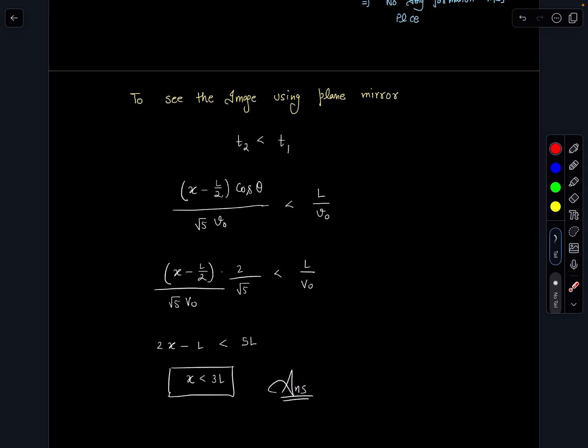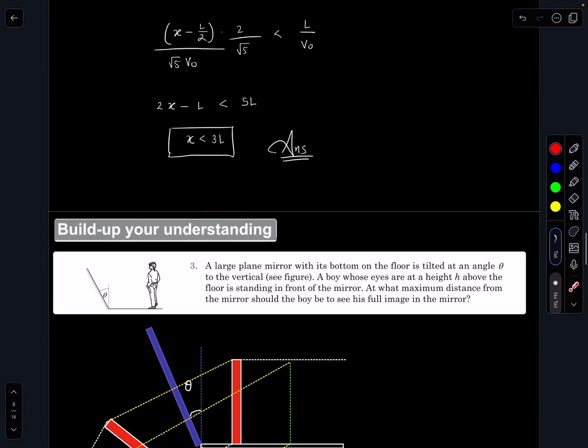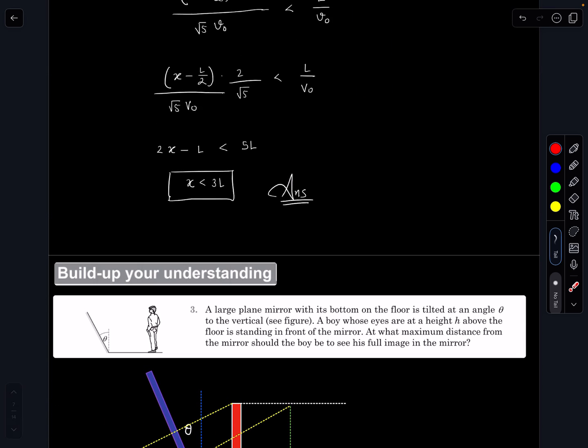There is one more problem on a similar concept from Pathfinder, under the section Build Up Your Understanding, or BYU. It is given: a large plane mirror with its bottom on the floor is tilted at an angle theta to the vertical. A boy whose eyes are at a height H above the floor, so one person is standing here with height H. They are asking at what maximum distance from the mirror should the boy be placed so that he can see his full image in the mirror.